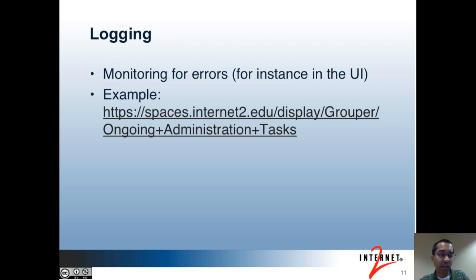The next item is regarding logging. The main point here is that you may want to set up your log4j configuration to send out emails when there are errors. For instance, in the UIs, if users are experiencing problems and errors are logged, you may want to know about it immediately. I've included a link to our ongoing administration tasks wiki page, which includes an example log4j configuration to send out emails.